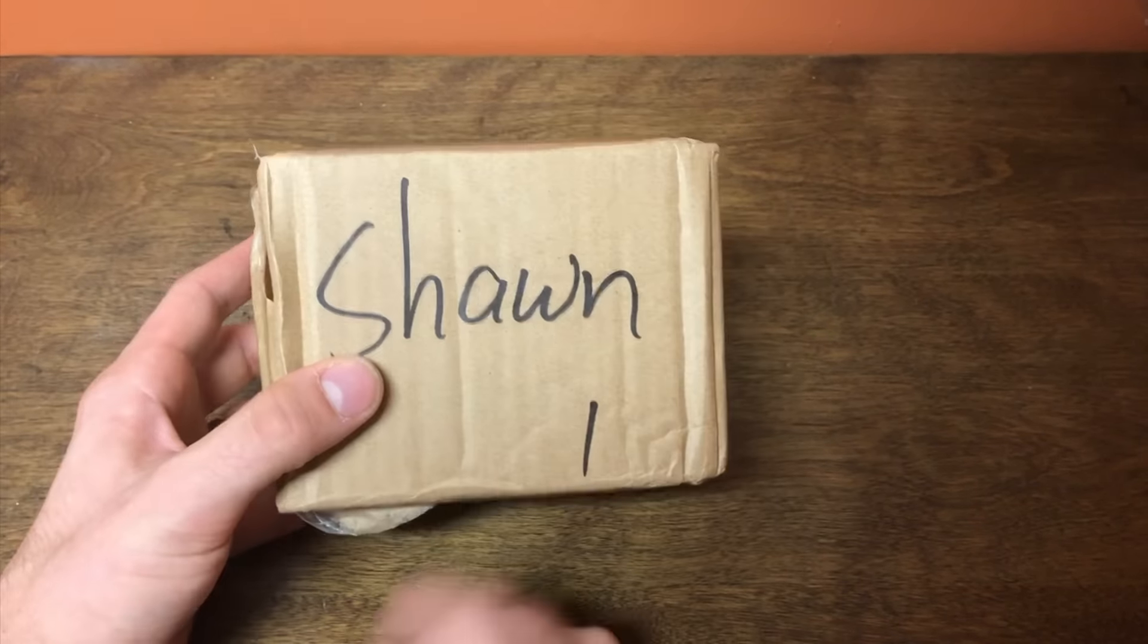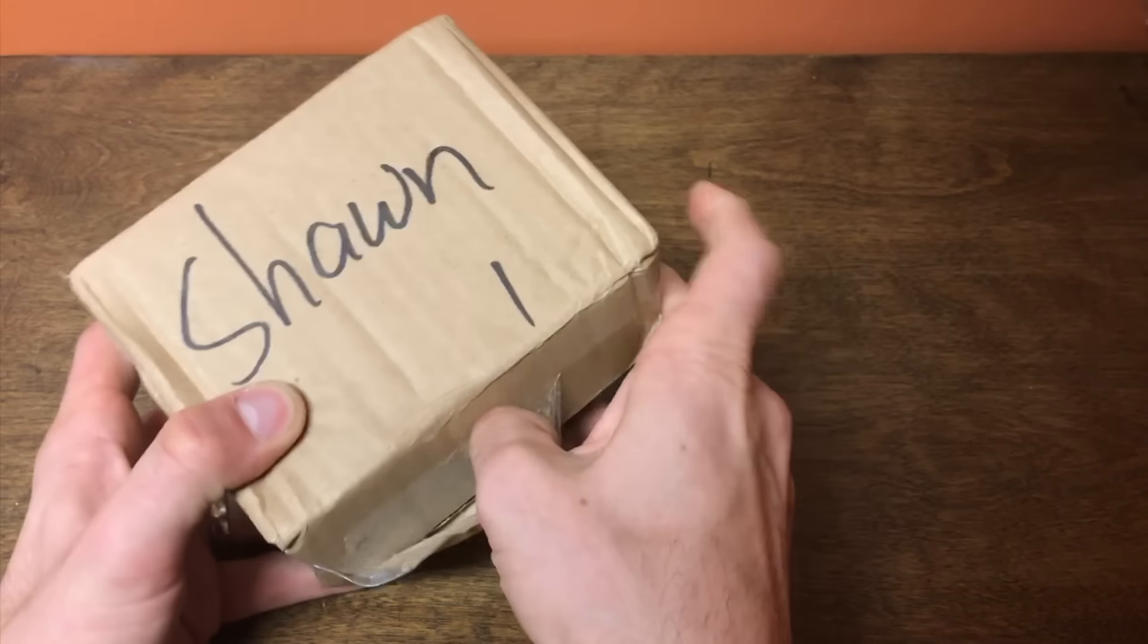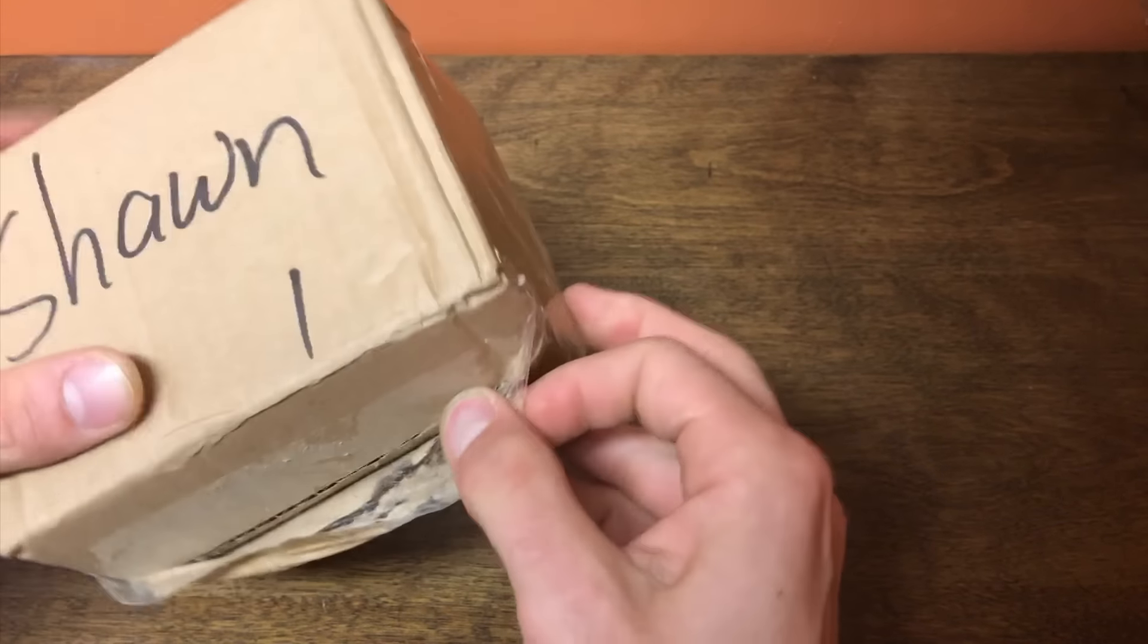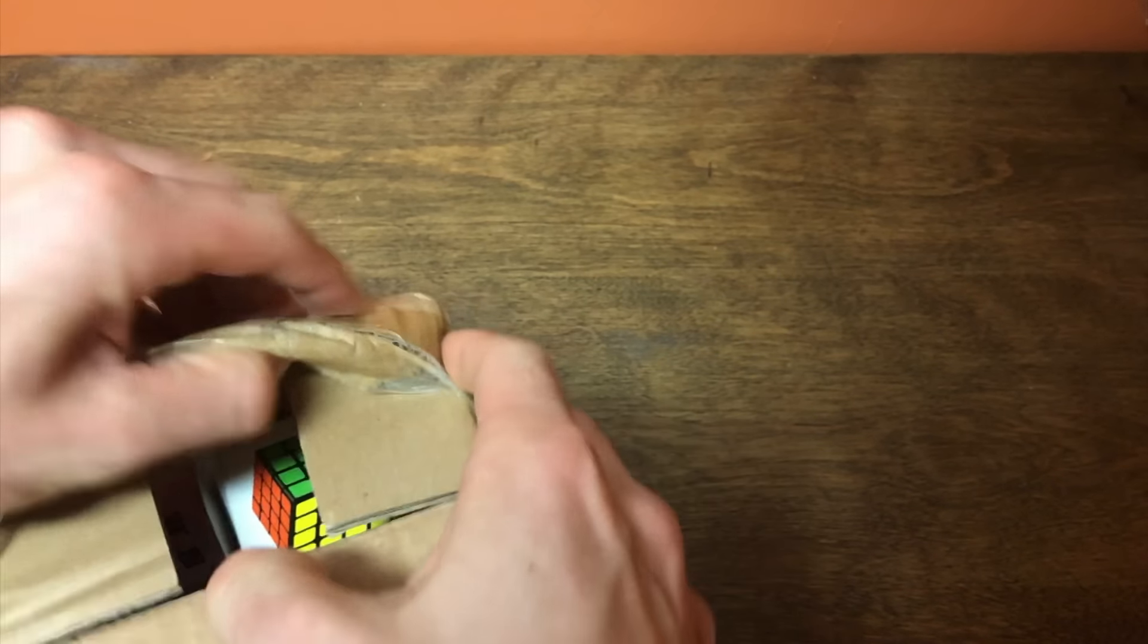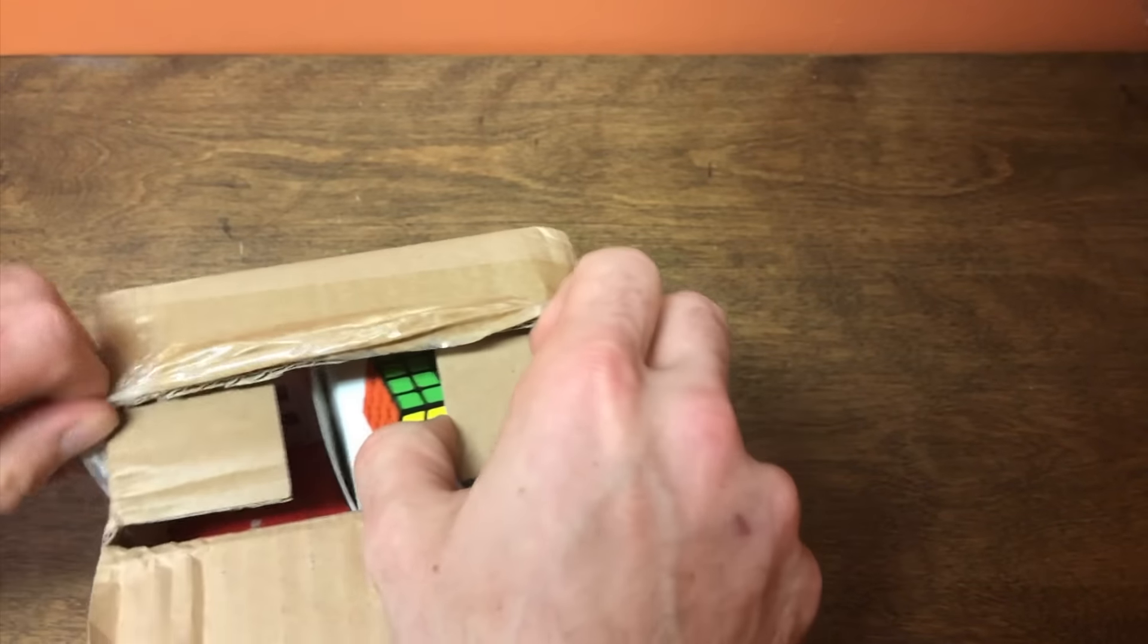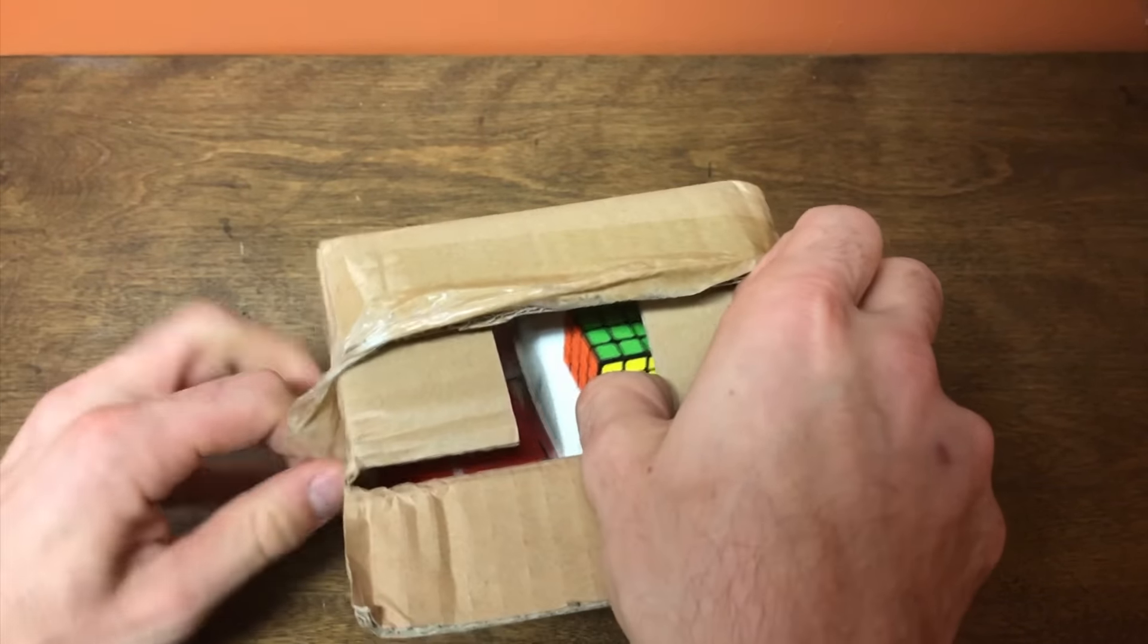So anyone who keeps trying to spell my name, that's how you spell it. Good job, Qiyi. Now this 4x4 has really gotten some attention mainly because Felix Zemdegs. He has been using his Aosu for like years. He hasn't switched to anything.